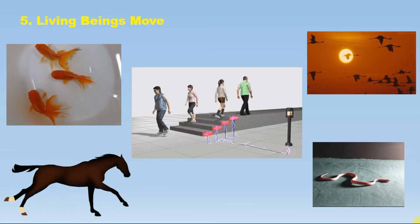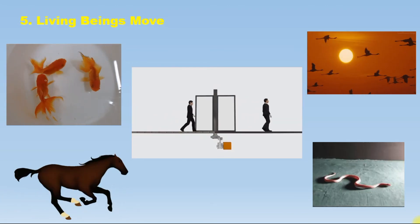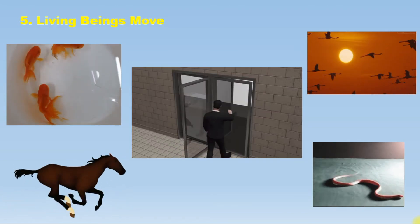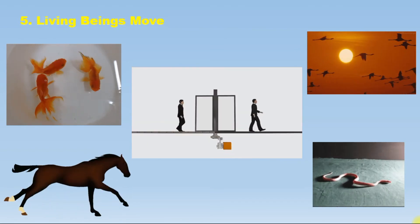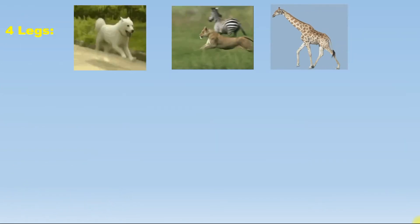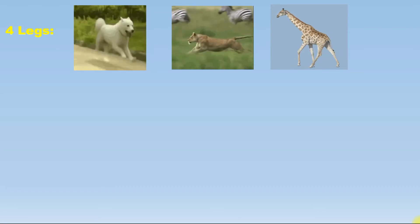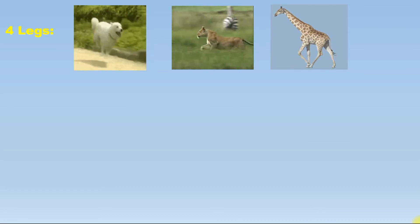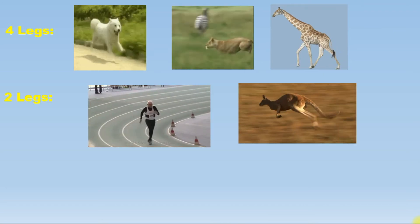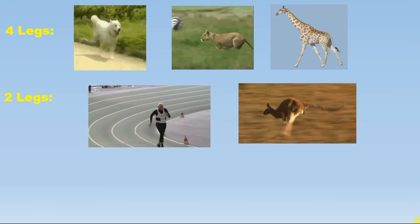The next characteristic is that all living beings show movement. If you focus on the pictures below, human beings and animals show movement — they use special organs to move from one place to another. Some animals use four legs to move, like dogs, lions, tigers, and a few use two legs to move from one place to another.